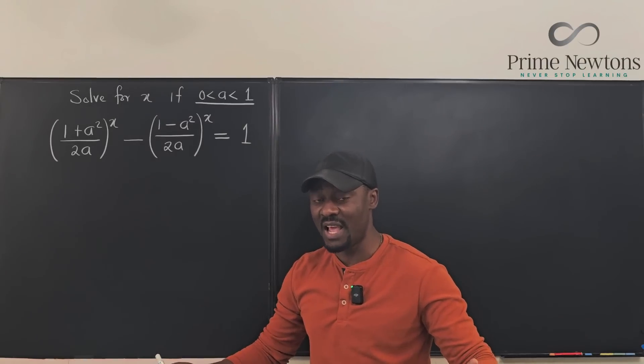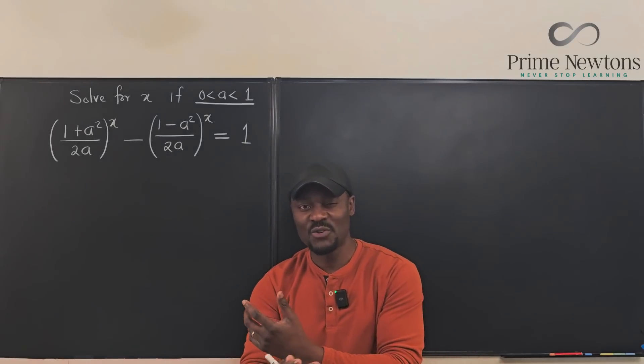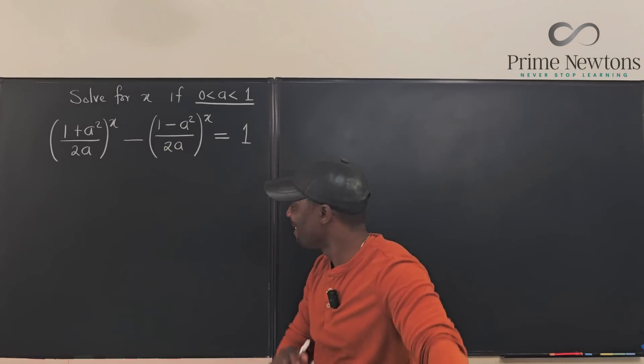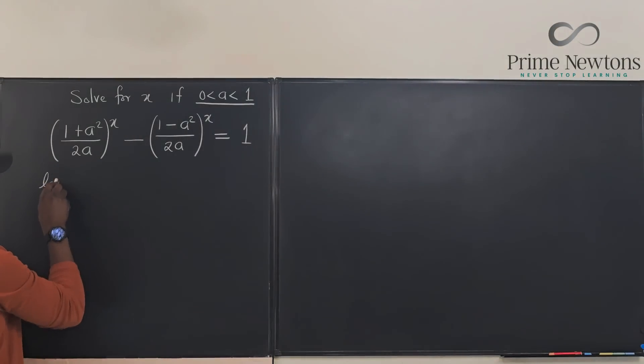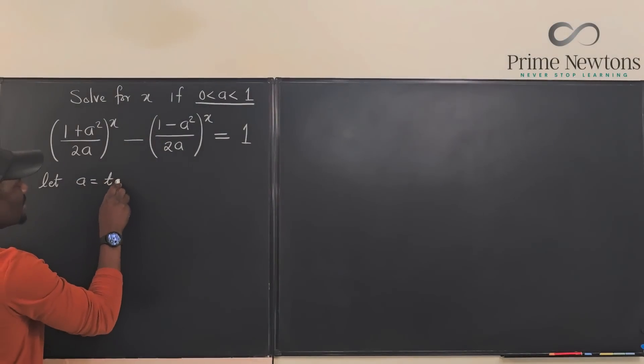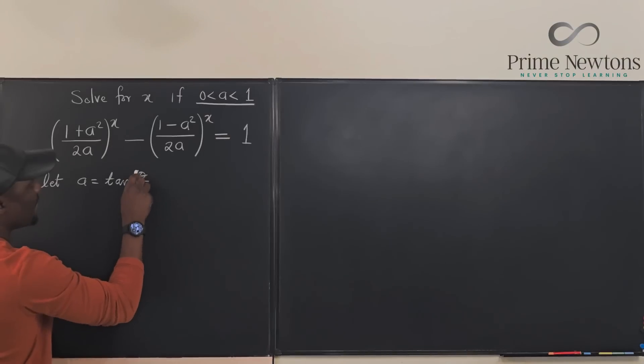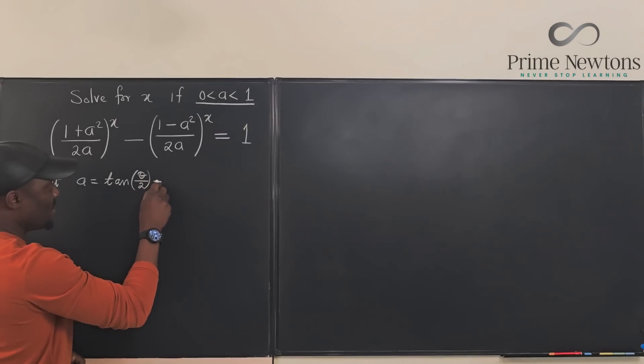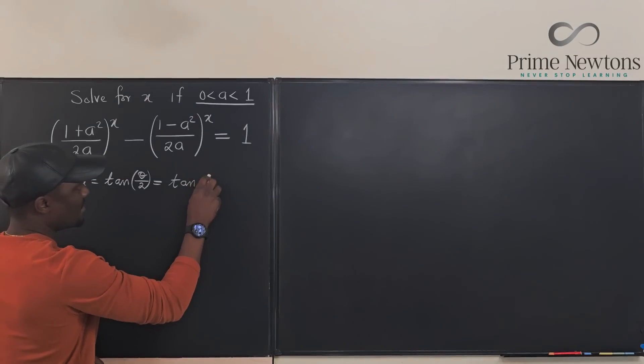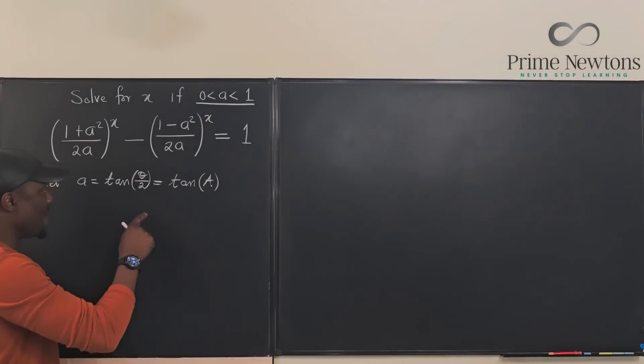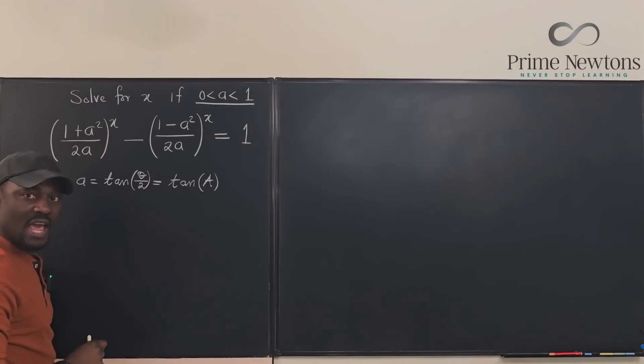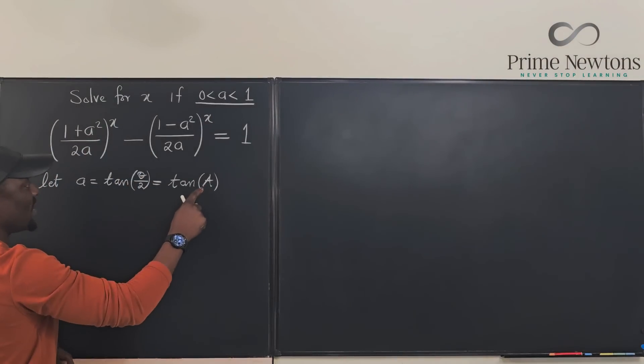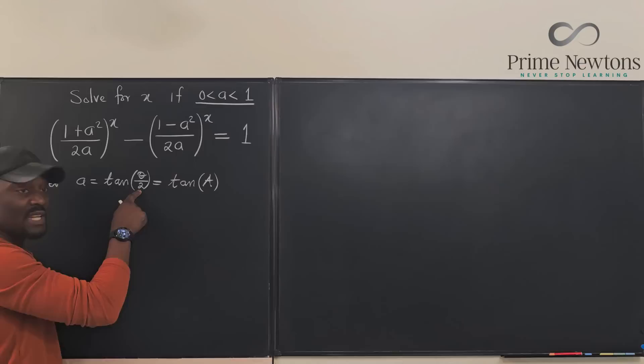It's going to look a bit messy at the beginning but things are just going to smooth out. Okay let's do it. So what we have is I'm going to say let a which is the variable be equal to tan theta over 2. Okay I'm going to leave it this way. In fact in order to make my life easy I can say let it be tan A. Okay just leave it because I don't want to be writing theta over 2 all the time. But now we know that theta over 2 is the same thing as A. So I'm going to go here and replace a with tan capital A.